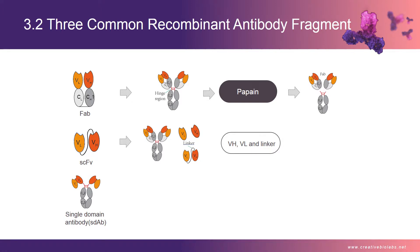The nonspecific protease pepsin cuts below the first disulfide bond in the hinge region, giving rise to an F(ab')2 fragment. The molecular weight of the F(ab')2 fragment is about 100 kDa. The Fab contains four domains: the heavy chain variable domain (VH) linked to constant domain 1 (CH1),